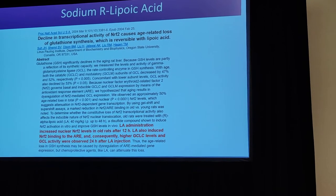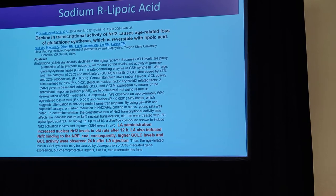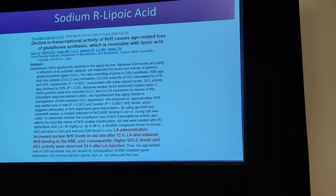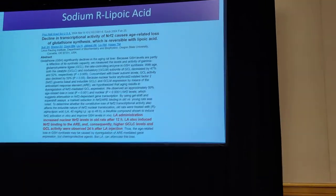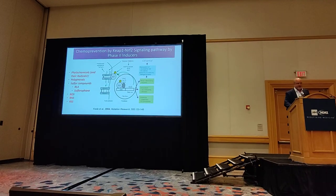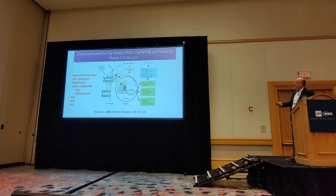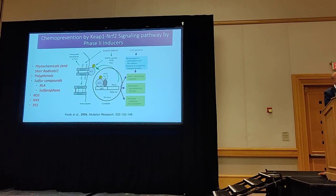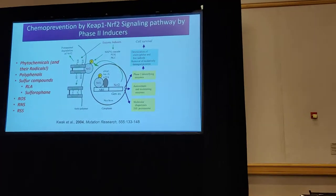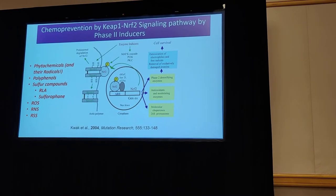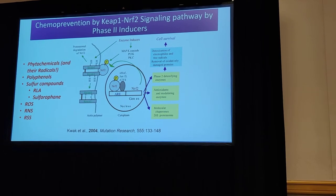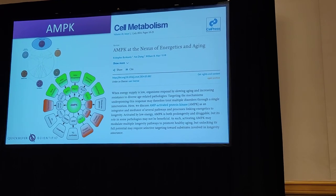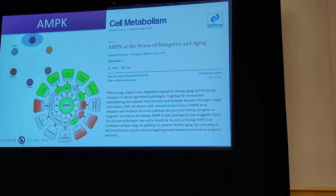Fisetin is interesting because it gives NRF2 activity but is also a PGC-1α activator, generating more mitochondrial biogenesis. NRF2 is primarily upregulated by polyphenols and sulfur compounds — like alpha-lipoic acid and sulforaphane — but naturally in your body it's reactive oxygen, nitrogen, and sulfur species accumulating that trigger NRF2 to bring up the system to clean those away.